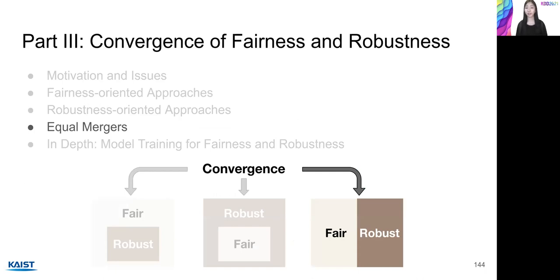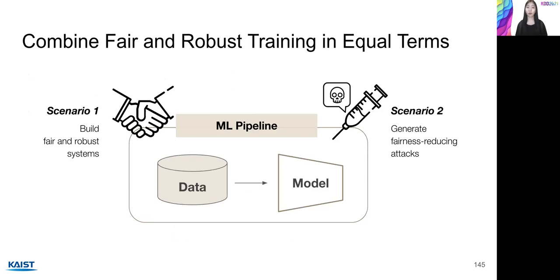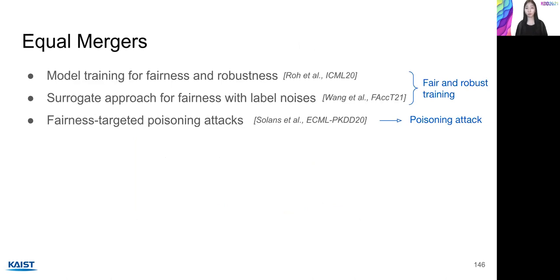The third direction is equal mergers for fairness and robustness. This approach aims to combine fair and robust training in equal terms to build a holistic framework that obtains the best of both worlds. There are largely two research directions: one is making model training fair and robust at the same time, and the other is taking the role of an adversary and generating attacks that not only reduce accuracy but also harm fairness. In the first scenario, the main challenge is addressing non-trivial issues when combining fairness and robustness, while in the second scenario, the challenge is designing poisoning attacks that also reduce fairness.